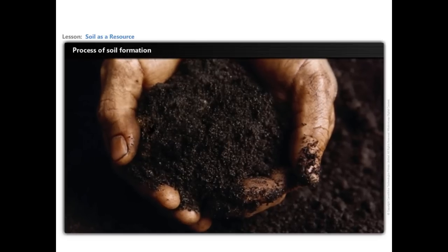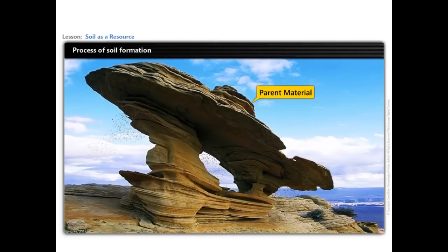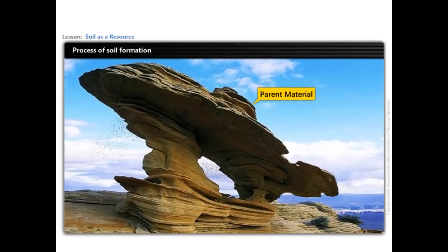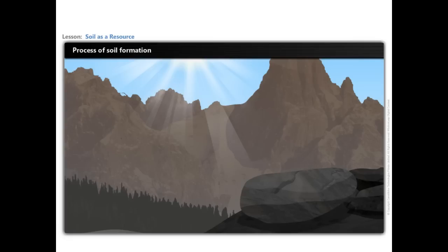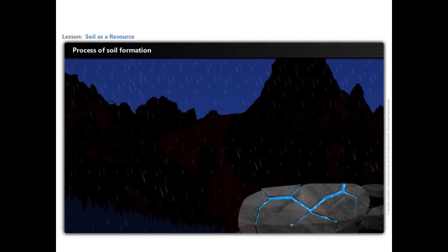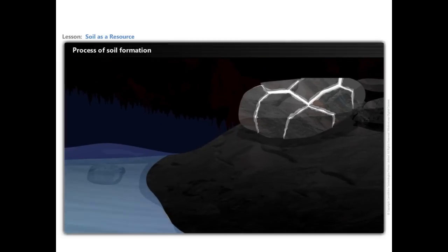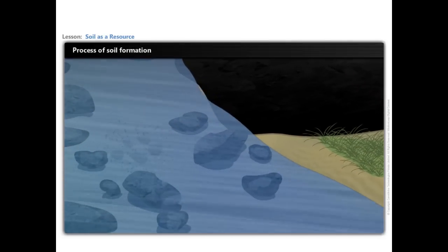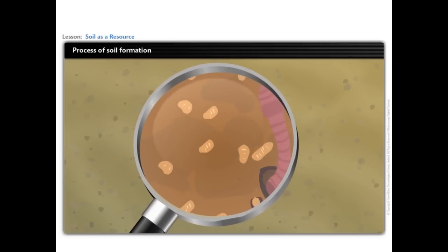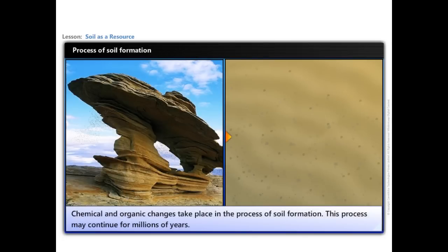Let us learn the process of soil formation. Parent material is the main material that the soil develops from. The characteristics and chemical composition of the parent material play an important role in determining the properties of soil. Repetitive changes in temperature create cracks on the parent rocks. Rainfall further helps in enlarging these cracks. Action of running water, wind and glacier further disintegrate the rocks into smaller particles and transport them from one place to another. Organisms like fungi and bacteria act as decomposers and play key roles in the formation of healthy soil that supports life.